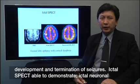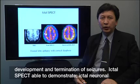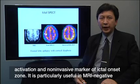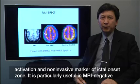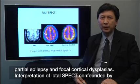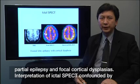Ictal SPECT is able to demonstrate ictoneuronal activation and serves as a noninvasive marker of the ictal onset zone. It is particularly useful in MRI-negative partial epilepsy and focal cortical dysplasia.